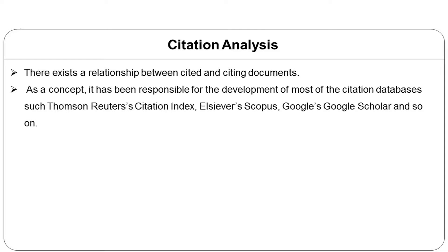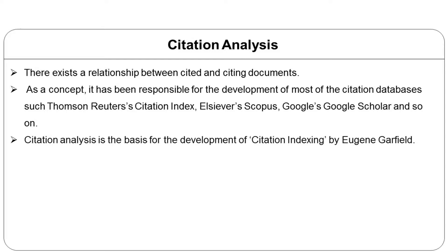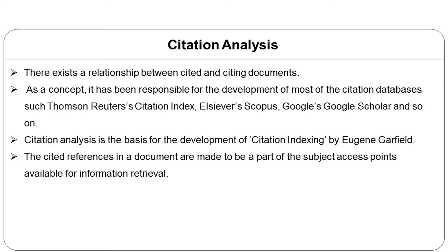As a concept, citation analysis has been responsible for the development of most citation databases such as Thomson and Reuters Citation Index, Elsevier Scopus, Google Scholar, and so on. Citation indexing is a contribution by Eugene Garfield. Citation indexing is a kind of indexing in which the bibliographic references of documents are made searchable and refer to the documents being indexed. The cited references in a document are made to be part of the subject access points available for information retrieval.